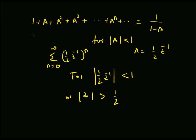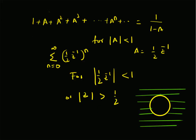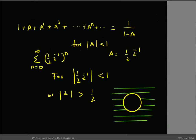Let us illustrate that graphically. The green region represents the entire z-plane outside the circle of radius 1/2. This circle has radius 1/2, and the region of convergence is the whole z-plane exterior to it.